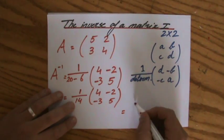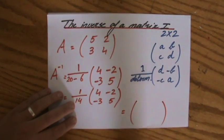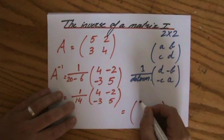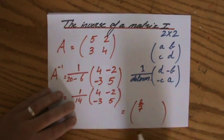4 times 1 over 14 is 4 over 14, 2 over 7. Your calculator will simplify that for you.